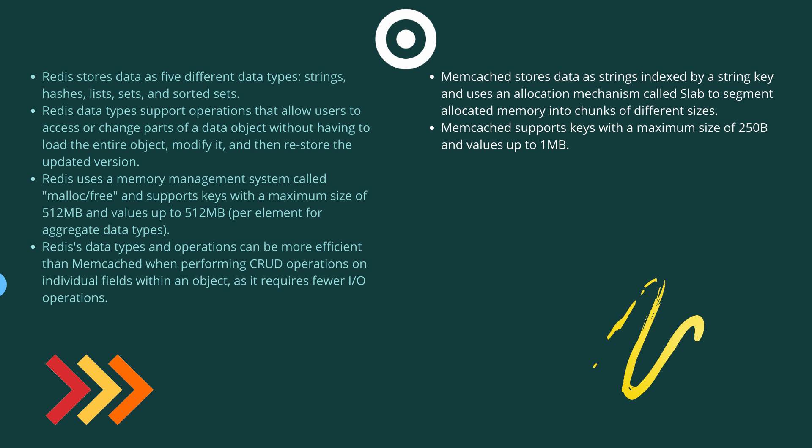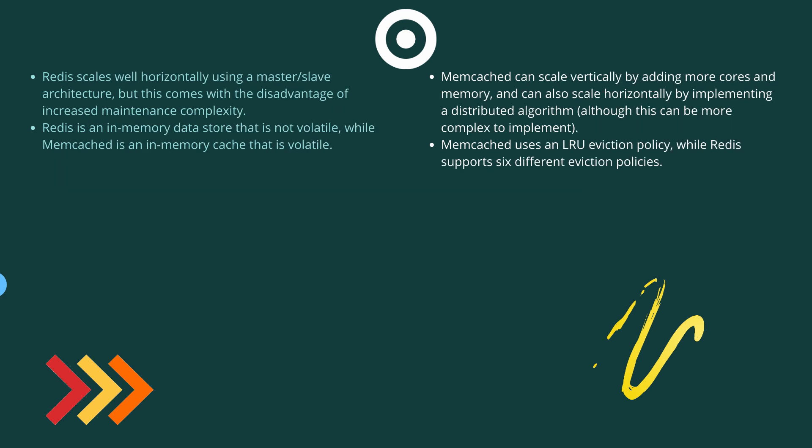Redis data types and operations can be more efficient than Memcache when performing CRUD operations. Redis scales well horizontally using a master-slave architecture. On the other hand, Memcache can scale vertically by adding more cores and memory, but it can also scale horizontally by implementing a distributed algorithm, although this can be more complex to implement.